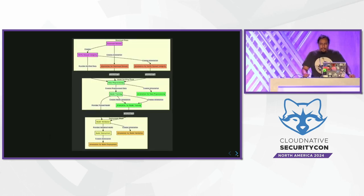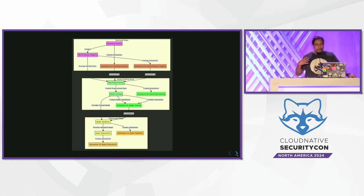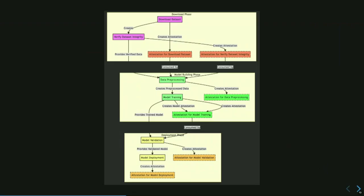As an example — and the image is a bit small — at the very top you have a download phase. This is like a typical AI pipeline, though they get more complex. At the download phase, when you're downloading a dataset, you want some way to hash that dataset or validate it.